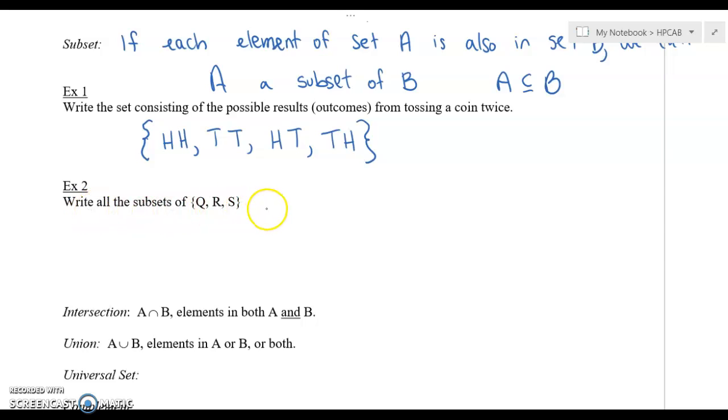We're going to write all the subsets of Q, R, and S. So what we're going to do is we're going to kind of organize our sets. We're going to write down all of the subsets with zero elements and then one element and then two elements. So we're going to start off with zero elements. And if we have zero elements, that's going to be the empty or null set. So it's going to look like this. So that's zero elements. And then we're going to talk about all the subsets that only have one element. So that would be just Q or just R or just S.